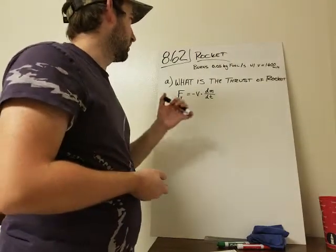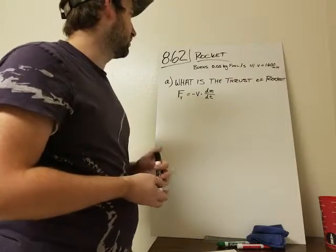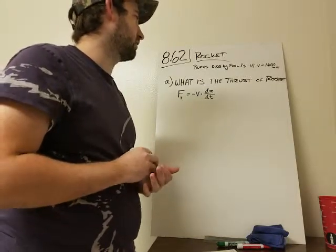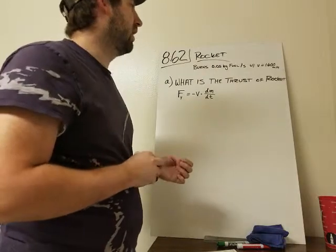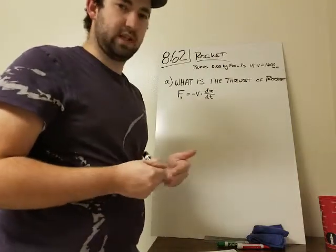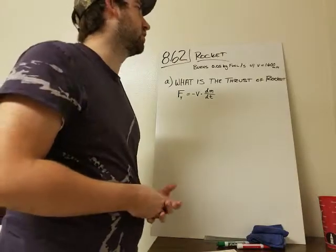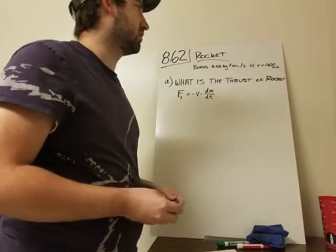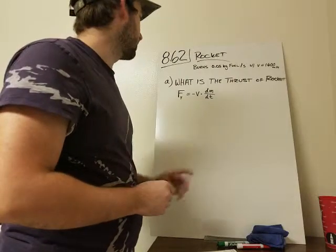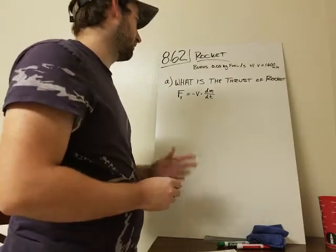So it talks about this rocket that burns 0.05 kilograms of fuel per second, and the velocity of the ejected gas from that combustion is 1,600 meters per second. So part A wants to know, what is the thrust of the rocket?